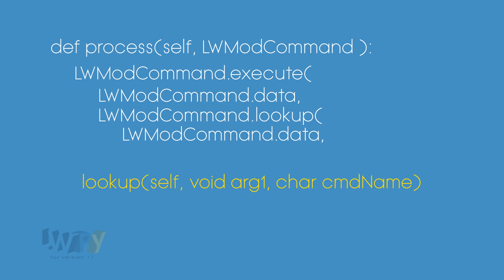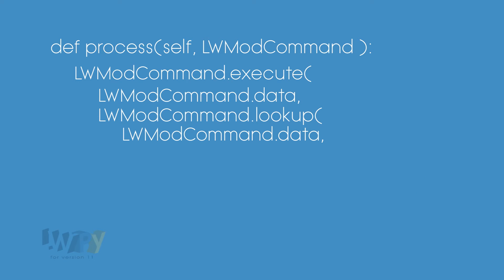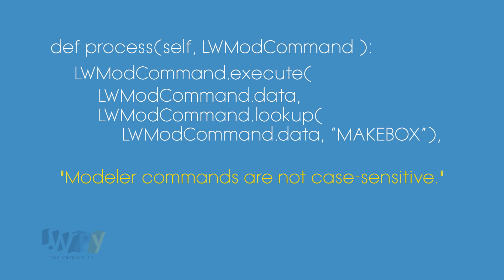The last argument for lookup is character command name. This is simply a string of the modeler command. Where do we get this modeler command? At the moment, we need to look in the C++ SDK in the section on modeler commands. For this code, we want makebox. Note this string is not case sensitive. The C++ SDK tells us at the very beginning of the section on modeler commands: modeler commands are not case sensitive.